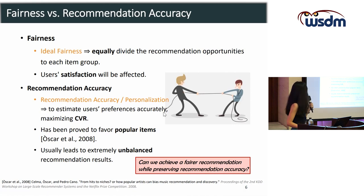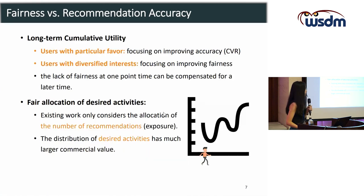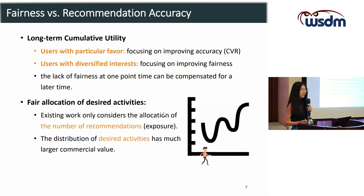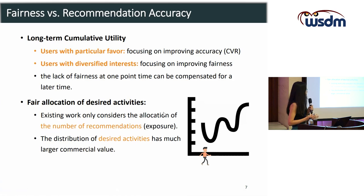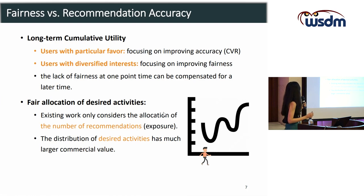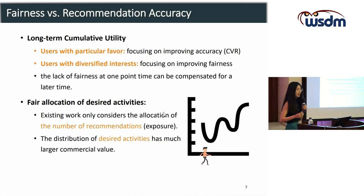In this work, we try to answer the following question: can we achieve a fair recommendation while preserving recommendation accuracy? Unlike existing work, we find that we can focus on improving accuracy for users with particular preferences, while the lack of fairness at one time can later be compensated when recommending users with diversified interest. The IRS tries to optimize the long-term cumulative utility to find a way to balance it over time.